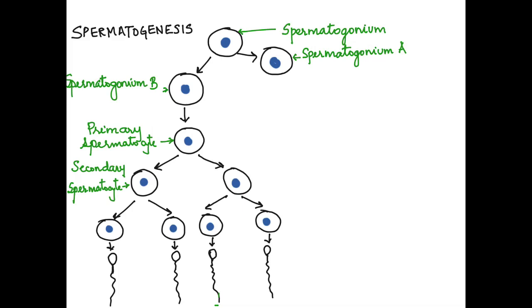Two secondary spermatocytes are formed, each of which undergoes meiosis II to form four spermatids. The spermatids then differentiate and become sperms or spermatozoa.